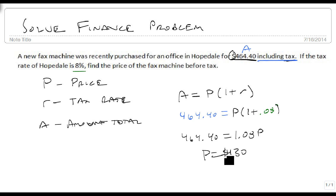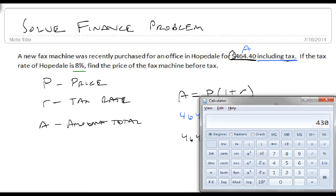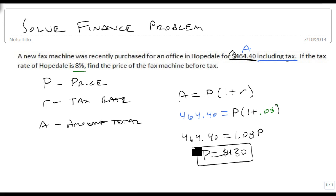Well, that sounds right, it's less than 464.40, but let's just make sure it's right. So if we take 430 times .08, we get 34.4, and 430 plus 34.4 is $464.40. So sure enough, this is our answer.